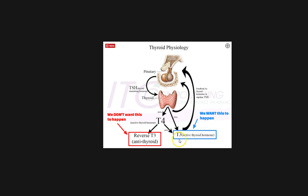How do you get T3 in your body? If you remember from yesterday's lesson, under the influence of TSH — thyroid stimulating hormone — the thyroid is stimulated to produce two main hormones. 80% of the hormone it produces is T4, but T4 is inactive. 20% is directly produced as T3. So your thyroid produces T3 directly, and T4 can also be converted into T3 — two separate ways the body obtains it.